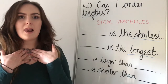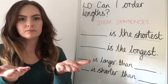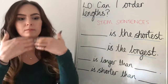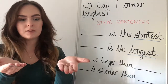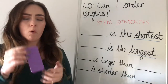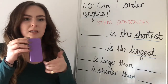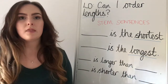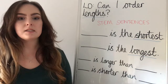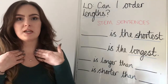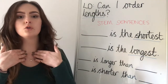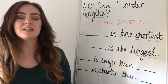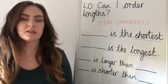My turn, your turn. Length. This is the measurement from one end of an object to the other end. The next keyword is shortest. This is the smallest length.